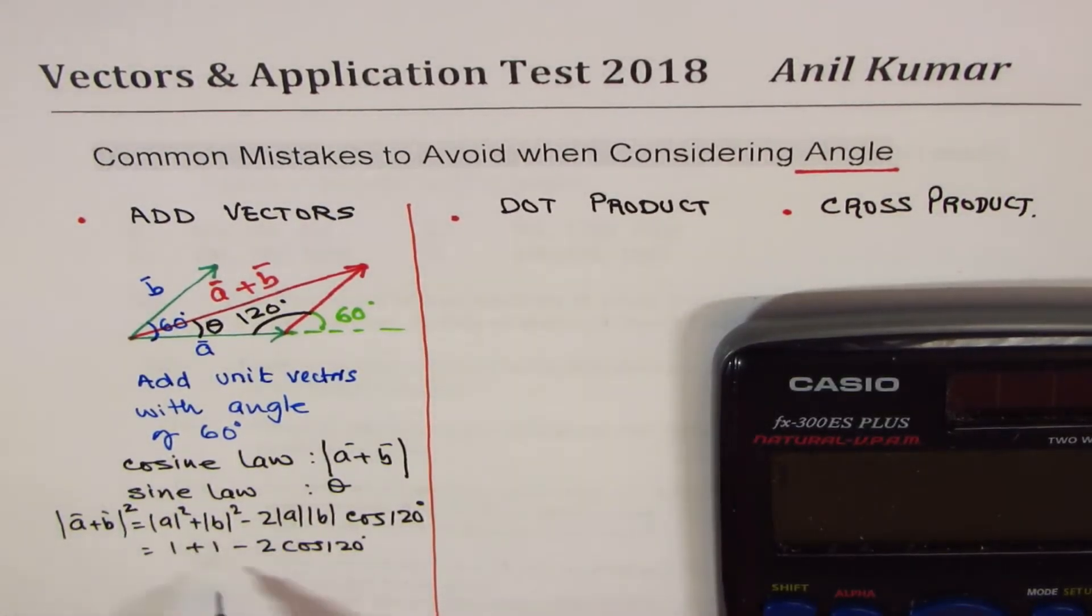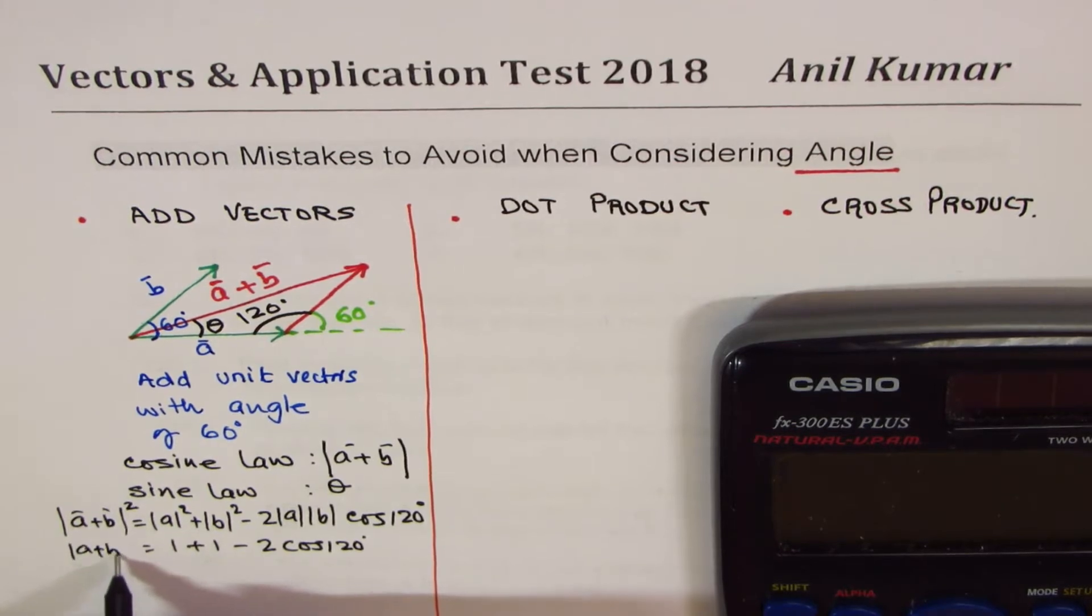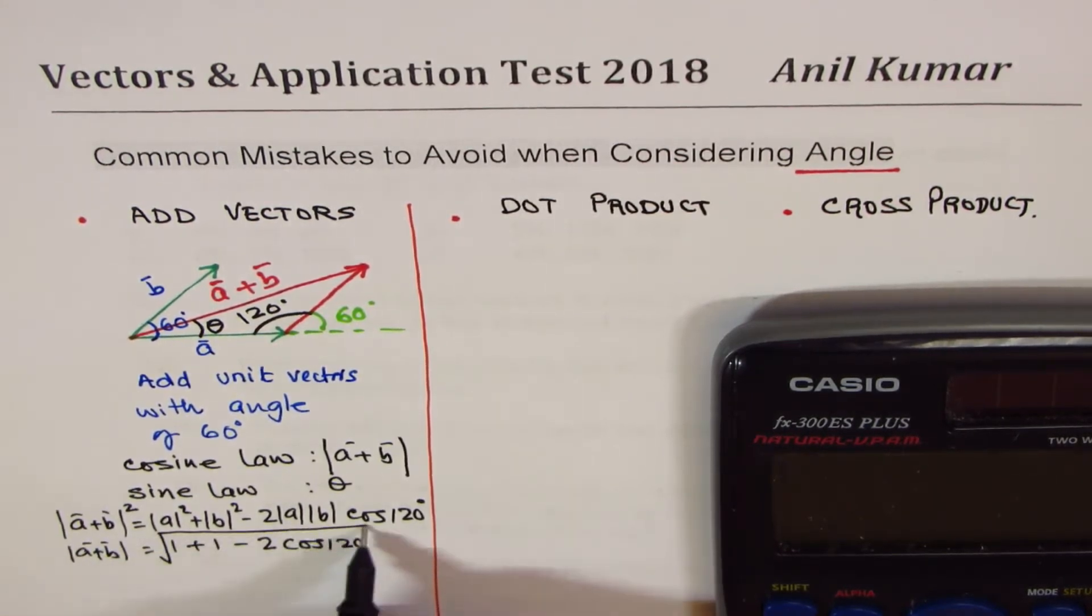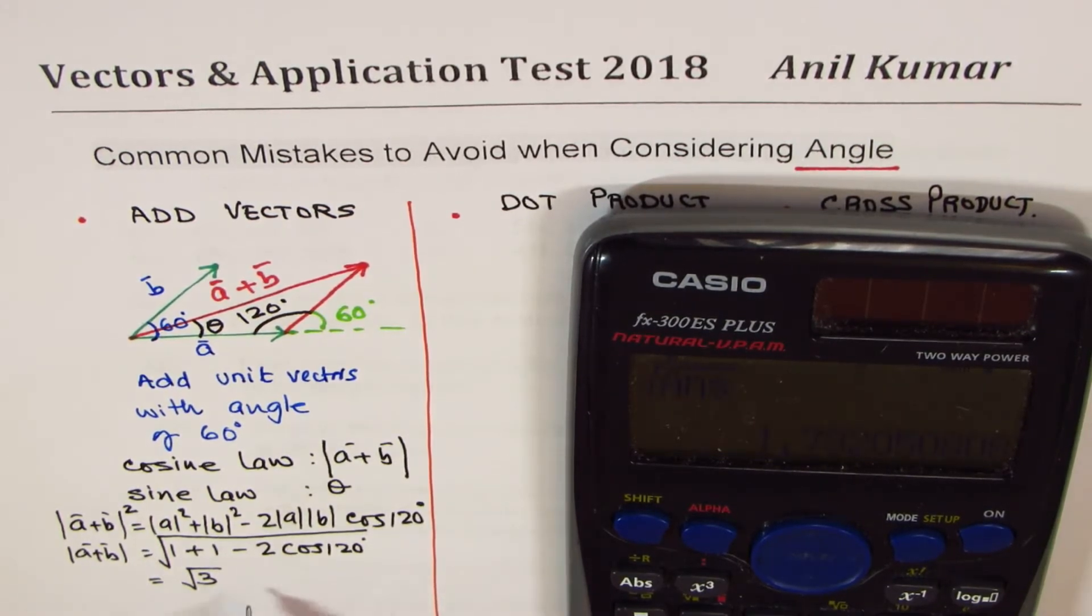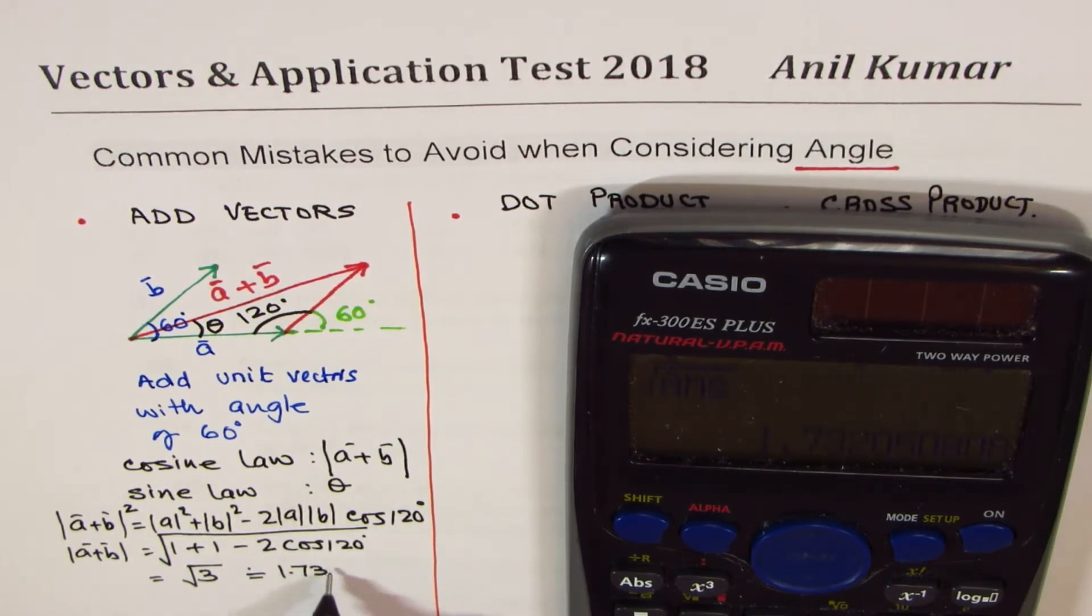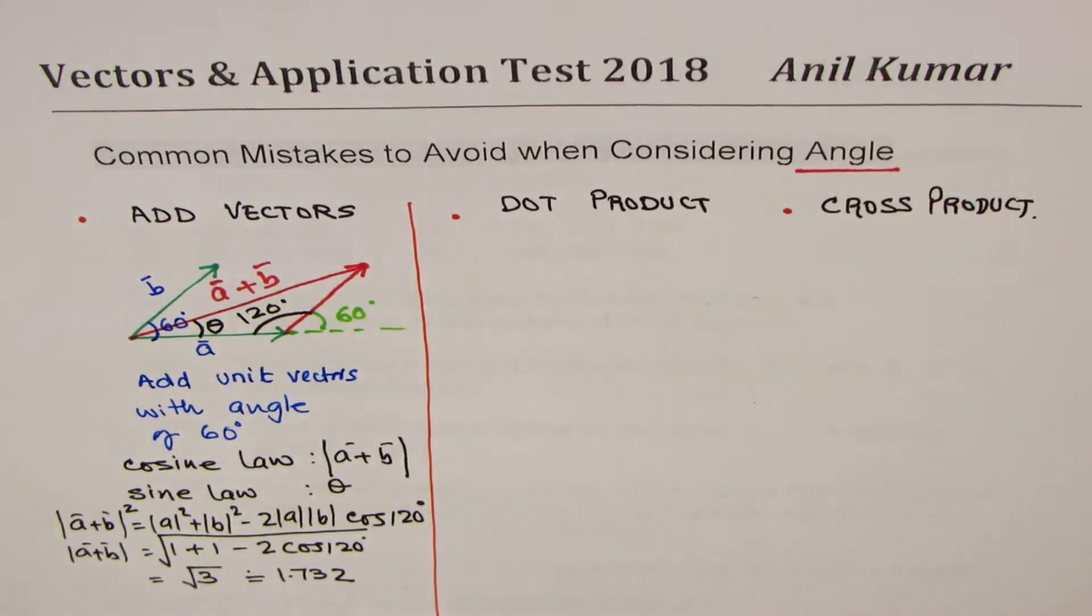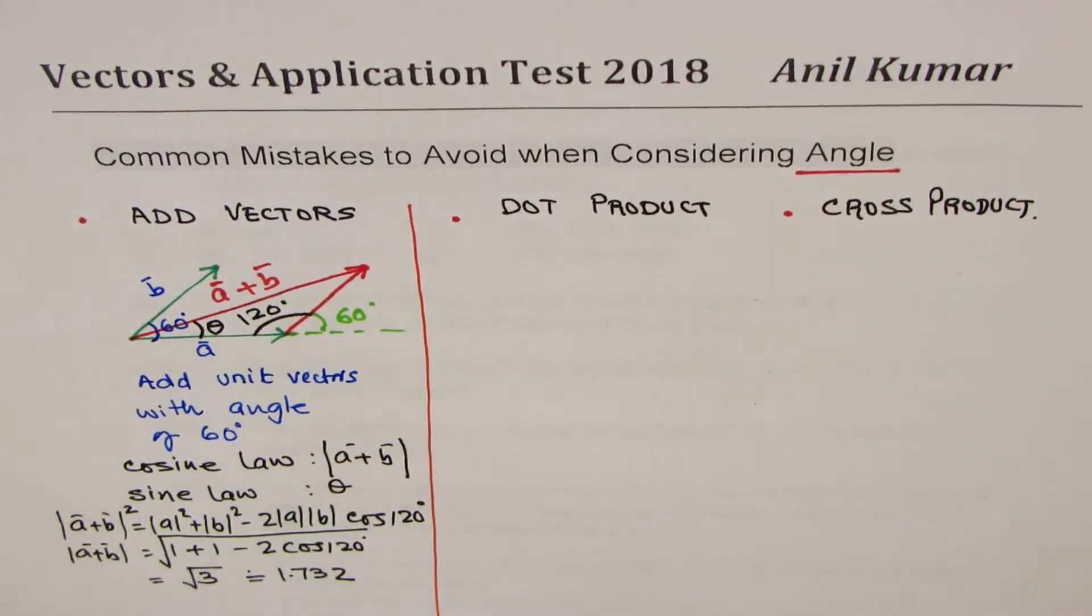I should have written square here. So the magnitude of a plus b will be square root of this. So it is 1 plus 1 minus 2 times cos of 120 degrees, which is equal to 3, and we have to do square root of 3. So we'll do square root of the answer, which is equal to, in decimals, if you have to write, you may round it to 1.732 or whatever. I'm not doing the angle part. You can do it. So that is first mistake, which normally happens.